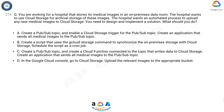A: Create a Pub/Sub topic and enable a Cloud Storage trigger for the Pub/Sub topic; create an application that sends all medical images to the Pub/Sub topic. B: Create a script that uses the Cloud Storage command to synchronize the on-premises storage with Cloud Storage; schedule the script as a cron job. C: Create a Pub/Sub topic and create a Cloud Function connected to the topic that writes data to Cloud Storage; create an application that sends all medical images to the Pub/Sub topic.